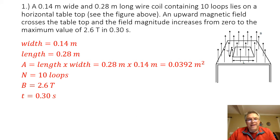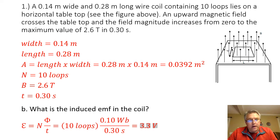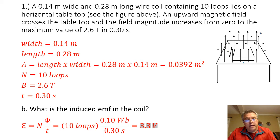Part B asks: what is the induced EMF in the coil? To find the induced EMF, we are going to use Faraday's Law. Faraday's Law tells us that the induced EMF is equal to the number of turns times the magnetic flux divided by time. Notice I have omitted the negative sign that we sometimes put in front of the number of coils in Faraday's Law.